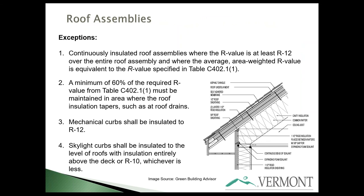New exceptions have been added to the roof assembly requirements. For continuously insulated roof assemblies where the R-value is at least R12 over the entire roof and the average area-weighted R-value is equivalent to the R-value specified in table C402.1, you are allowed to have some areas insulated heavier than others where it tapers, as long as you achieve the average equivalent to the table and no point is less than R12.